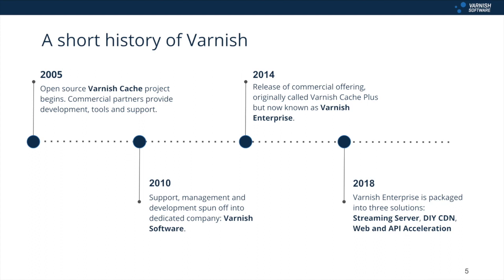Just to go through a short history of Varnish to see how the solutions relate. The open source Varnish Cache project was initiated by the online branch of a major newspaper that had reached over 45 million weekly page views and was looking for a way to reduce their server usage while loading pages faster. The Varnish Cache project was born after funding was secured and commercial partners provided development tools and support. These operations were later spun off into their own dedicated company, Varnish Software.